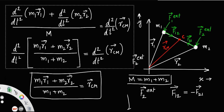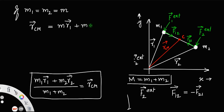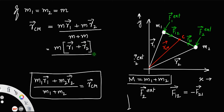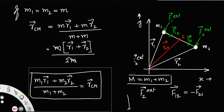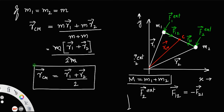What is the case if the masses are equal? If m1 equals m2 equals m, then rcm equals (m r1 plus m r2) divided by (m plus m), which equals m(r1 plus r2) divided by 2m. The m cancels, and rcm equals (r1 plus r2) divided by 2. If the masses are equal, the position vector of the center of mass is simply the average of the two position vectors.